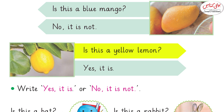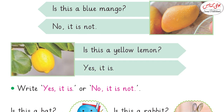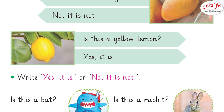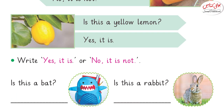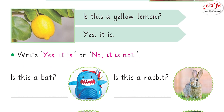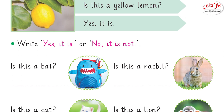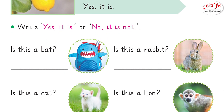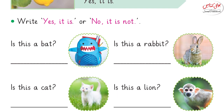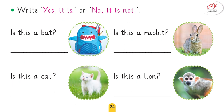Is this a blue mango? No, it is not. Is this a yellow lemon? Good, yes it is. Okay, now it's time to fill in the blanks. You just write yes or no.